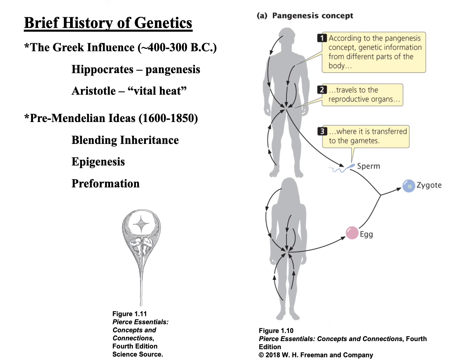Now we'll jump ahead several hundred years to what's referred to as the pre-Mendelian era, about 2,000 years after the Greek influence. Some of the ideas that predated Mendel — who is considered the father of modern-day genetics — set the stage for when Mendel's work was emerging. The first major one is a concept known as blending inheritance, which proposed that offspring are somehow an intermediate to their parents — that characteristics from parents blended to form the characteristic in the offspring. This was the dominant idea at the time for how inheritance worked.